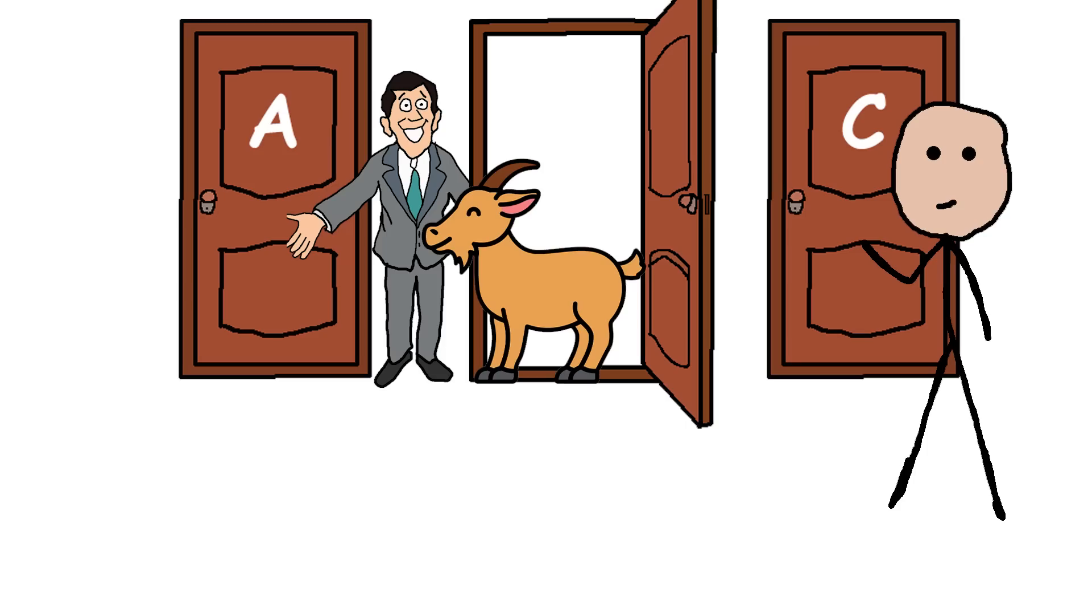But the combined probability for the other two doors, since Monty won't reveal the car, becomes two-thirds. Therefore, switching to the other door increases your chances of winning to two-thirds.